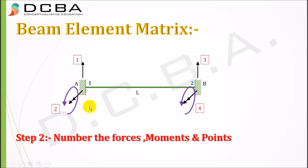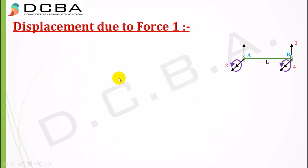Step two is to number the forces, moments, and points. We have point one and point two. Starting from the upward vertical force at point one: force one is the vertical force, force two is the moment, force three is the vertical force at point two, and force four is the moment at point two. This numbering is a very important step as these markers are used to construct the matrix.